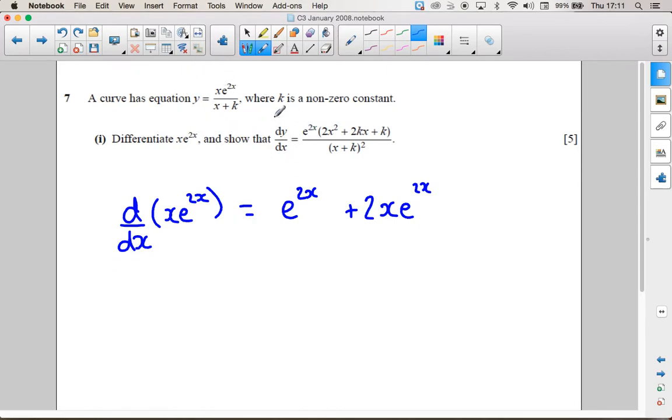We're then going to differentiate this whole thing using the quotient rule. So for the quotient rule, we differentiate the first one, the top one, which is this, e to the 2x plus 2xe to the 2x. And leave the second thing alone, the bottom thing alone,